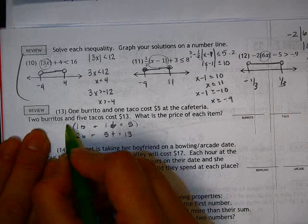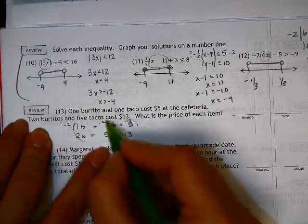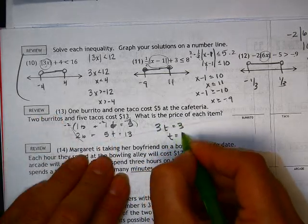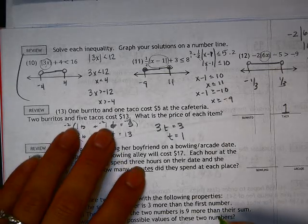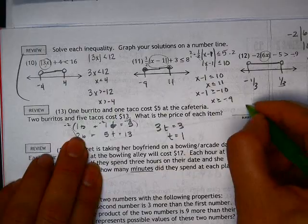So I am going to multiply 3 by a negative 2. Those cancel. I'm left with 3t is equal to 3, so t is equal to $1. The taco is $1. So if the taco is $1, then that means the burritos must be $4.